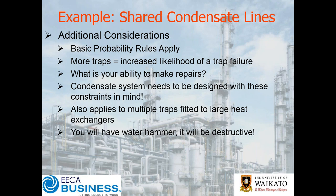Basic rules of probability apply: the more traps you have, the more increased likelihood of one of those traps failing. What you've got to consider is your ability to make repairs, and your condensate system also needs to be designed with these constraints in mind. When we talked about sizing the condensate line, if you need to tolerate a couple of traps failing — which is likely if you haven't got the right trap or it's not ideally installed — the likelihood all goes up. These are all extra risk factors to bear in mind. Ultimately, if you get these things wrong, you will have water hammer and it will be destructive.